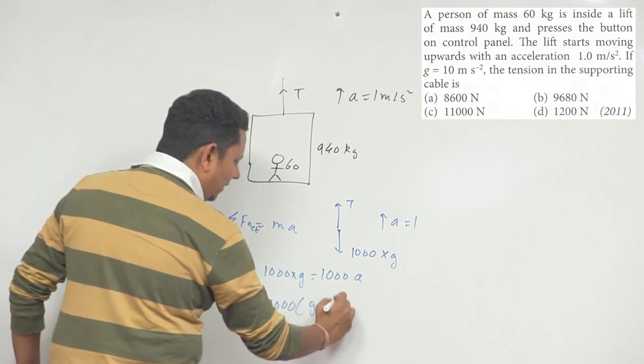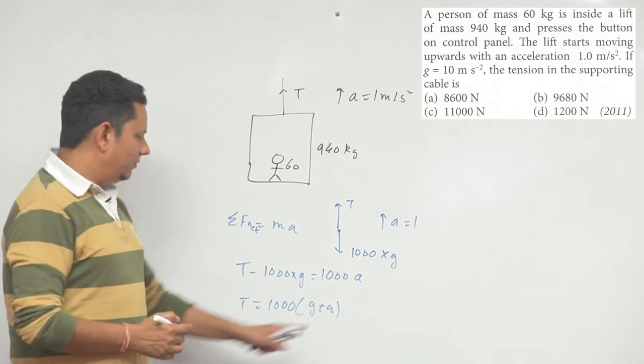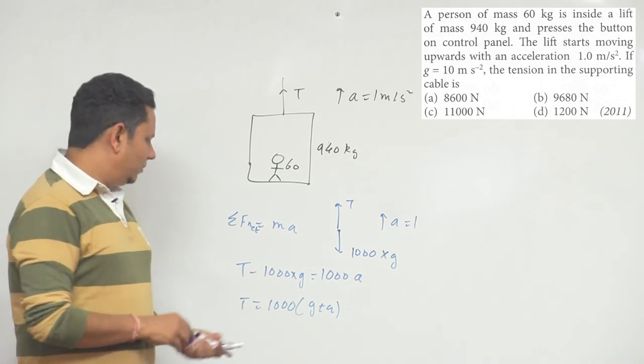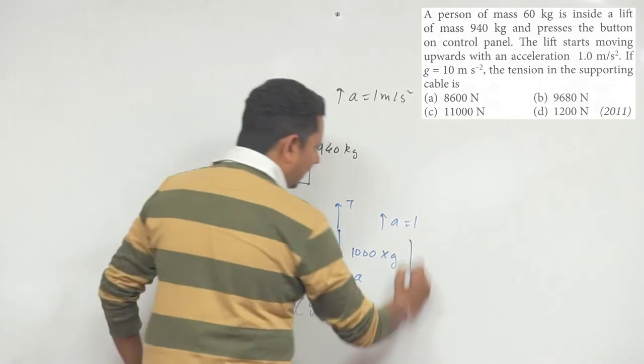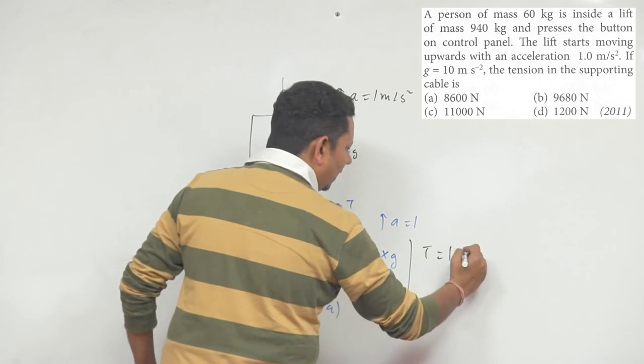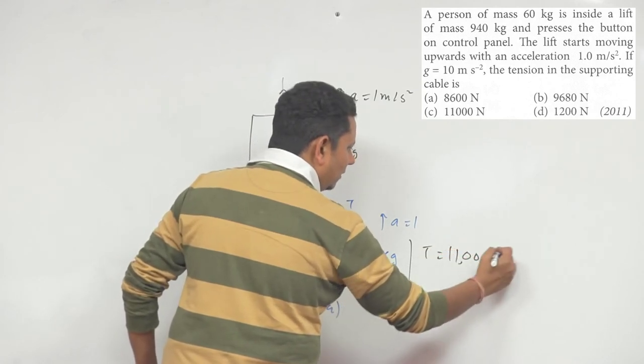So T equals 1000 times (G plus A). G is 10 and A is 1, so that's 11, giving us a final answer: tension T equals 11,000 Newton.